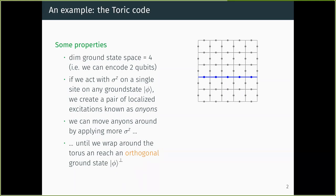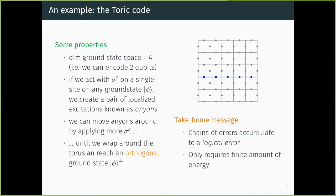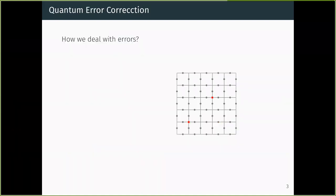Two important facts about this model: first, when many errors chain up, they can produce a logical error — you encoded one ground state but decode to an orthogonal one. Second, to do this, you only need to create two excitations, meaning you only need to go up by a fixed amount of energy in the spectrum. You don't need to reach an energy that scales with n. These two properties are very common to any 2D quantum memory.